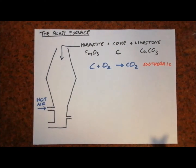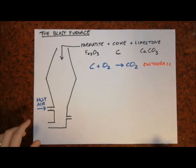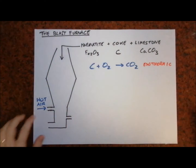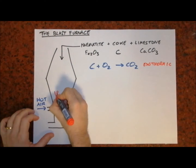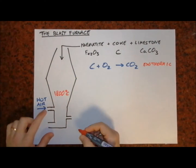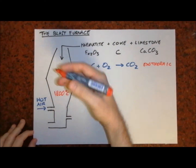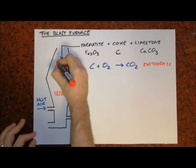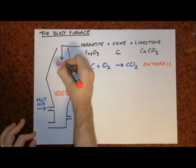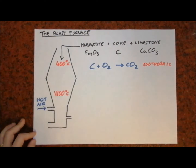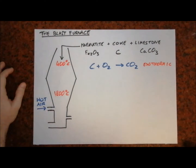Note how the temperature varies inside the blast furnace: about 1800 degrees at the bottom, gradually getting cooler as we get to the top — about 400 degrees at the top.